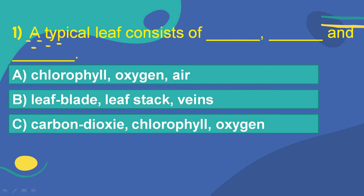The first question is: A typical leaf consists of dash, dash, and dash. Option A: Chlorophyll, oxygen, air. Option B: Leaf blade, leaf stalk, veins. Option C: Carbon dioxide, chlorophyll, oxygen.